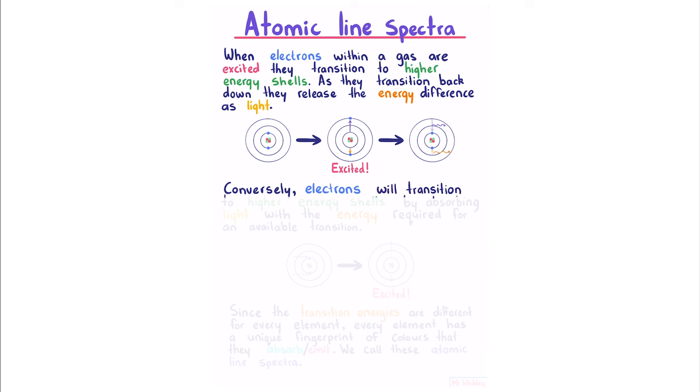Conversely, electrons will transition to high energy shells by absorbing light with the energy required for an available transition. So we can have the opposite process, where instead of electrons transitioning down and emitting light, we can have electrons absorbing light and transitioning up.